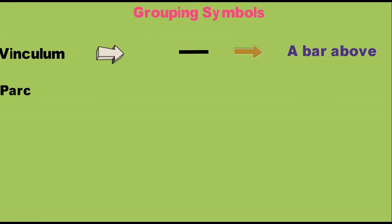This is the name of the Vinculum. This is a bar. This is A plus B with a bar above. This is the Bar Bracket, but Oxford's name is Vinculum.